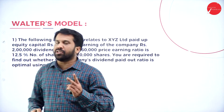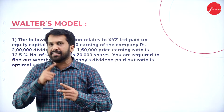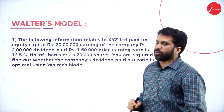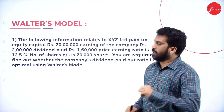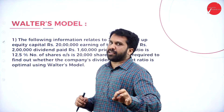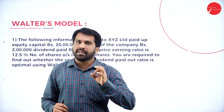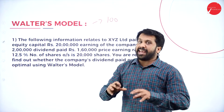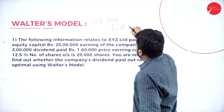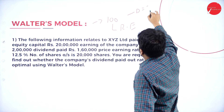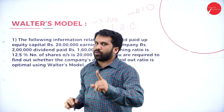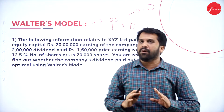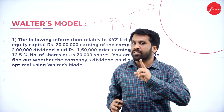Under dividend decision the major two models are Walter's model and Gordon's model. Under Walter's model, the concept is: whatever profit is earned, everything should be kept as retained earnings. Dividend given is zero — the company will not give even one rupee to the shareholder. Whatever profit is earned, keep it as savings.